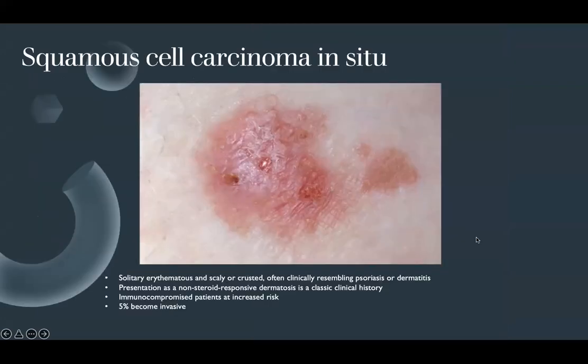Squamous cell carcinoma in situ, or Bowen's disease, clinically presents as solitary erythematous and scaly or crusted papules or plaques, often resembling psoriasis or dermatitis. Presentation as a non-steroid responsive dermatosis is a classic clinical history. Immunocompromised patients are at increased risk. Unfortunately, 5% of these will become invasive.